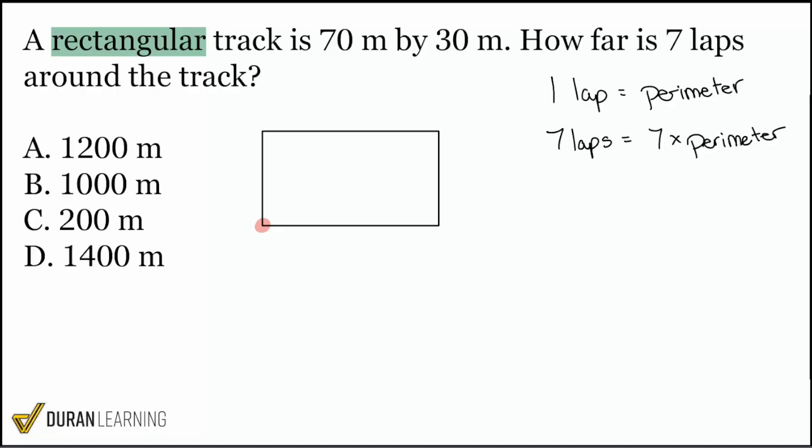So now that we know that, boom, we've got our game plan. We know what we want: seven laps. We know what we have: a rectangle. What can we do with a rectangle? Here's the connection. I can calculate the perimeter because the perimeter is one lap. Once I calculate the perimeter one time, I'll just multiply it by seven because that'll give me seven laps. Here we go.